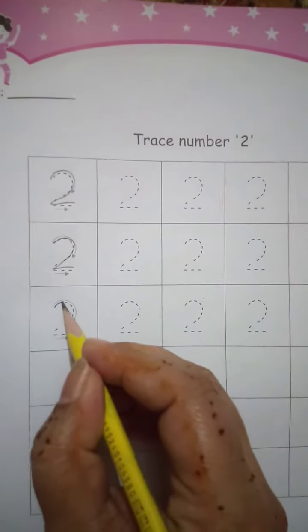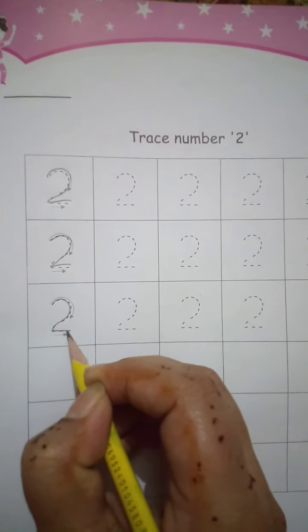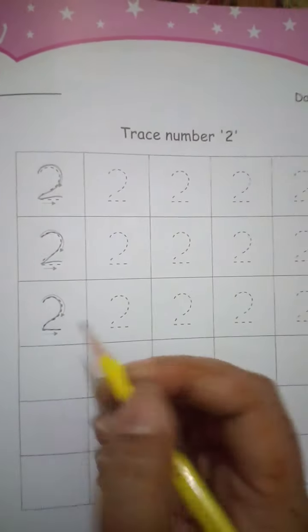First of all, make a curve, come down, make a slant line, and then make a sleeping line. It's 2. Trace it again: make a curve, make a slant line, and then make a sleeping line. Again, trace it.